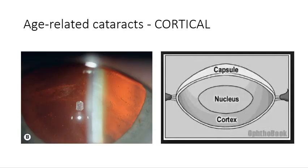The last type of age-related cataract is a cortical cataract, and of course these are found in the cortex of the lens. They are very easy to spot because cortical cataracts develop a spoke-like appearance, particularly as they mature. The first spokes usually appear in the inferior nasal quadrant of the lens. Quite similarly to posterior subcapsular cataracts, patients complain of quite severe glare when they have cortical cataracts. On the image on the left, you can see the spokes quite clearly streaming towards the middle.